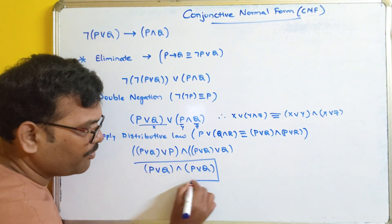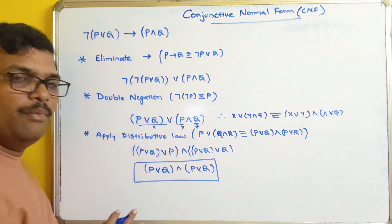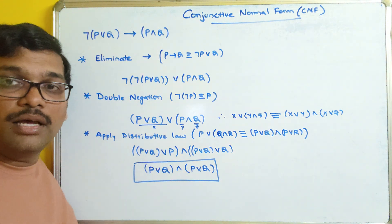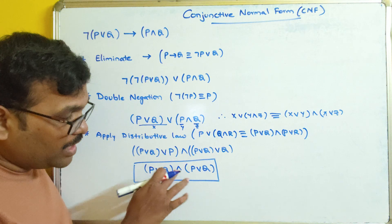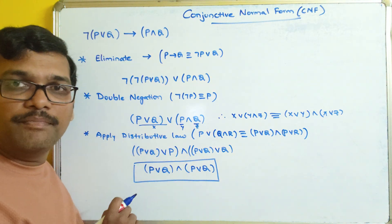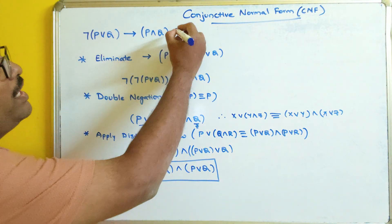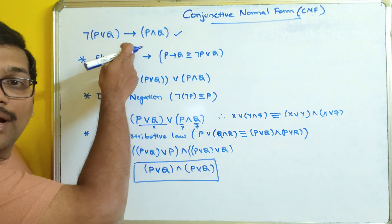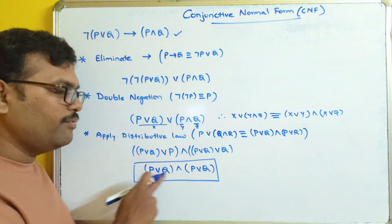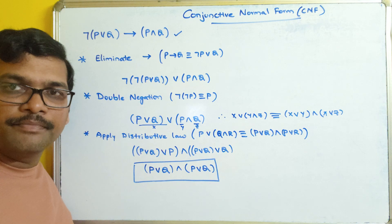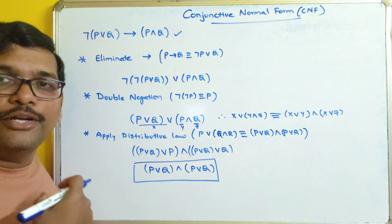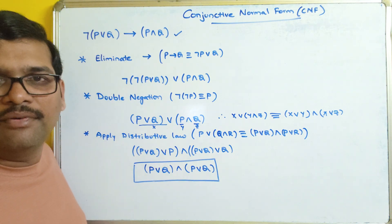You can observe both are elementary sums separated by the conjunction connective. So we have taken this formula and converted it into the product of elementary sums. This is how we convert any formula into CNF.